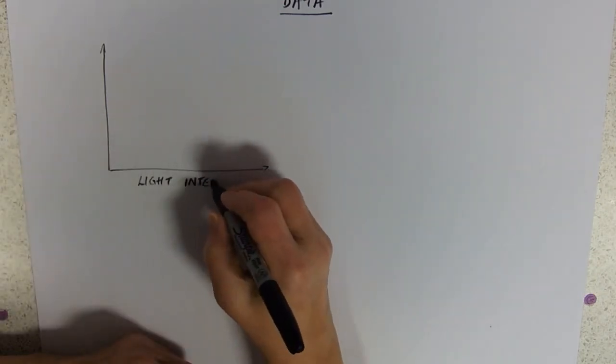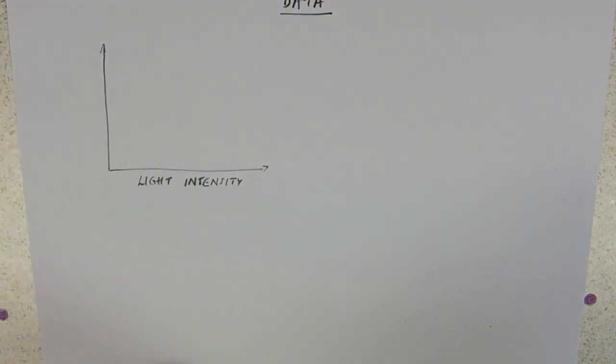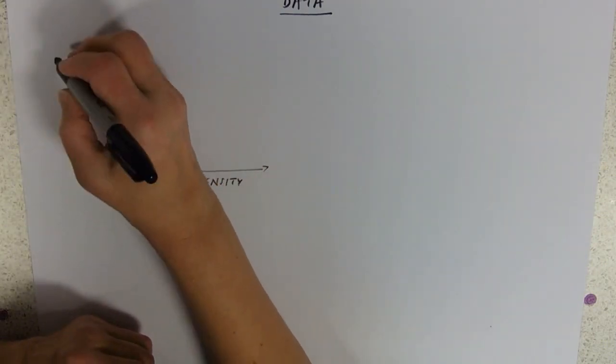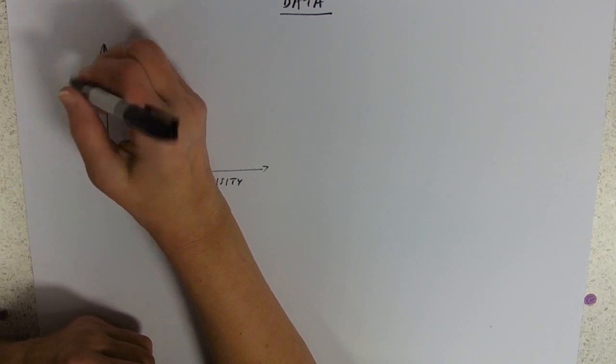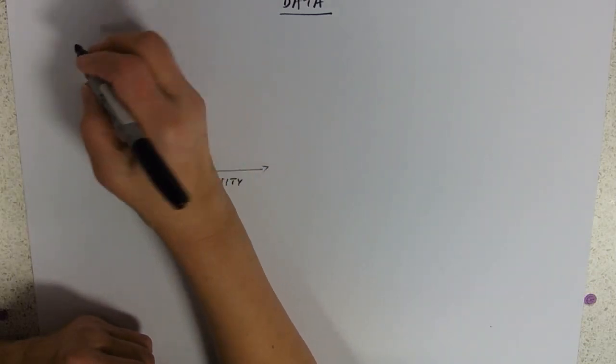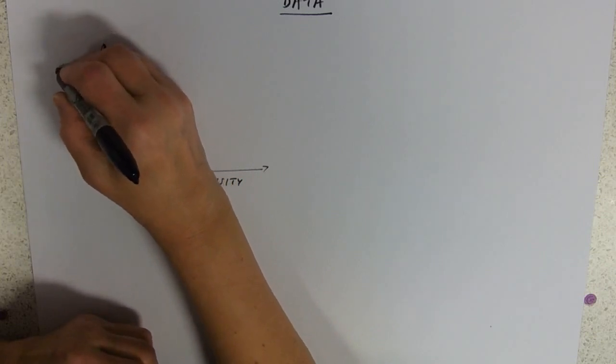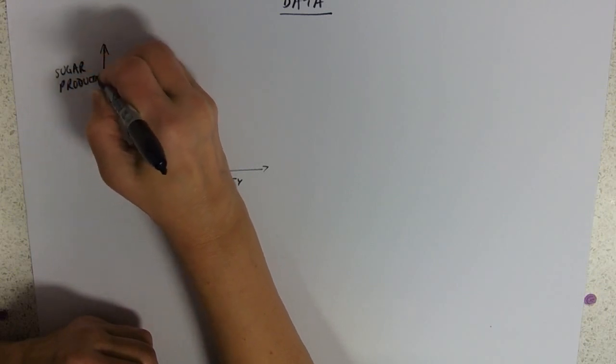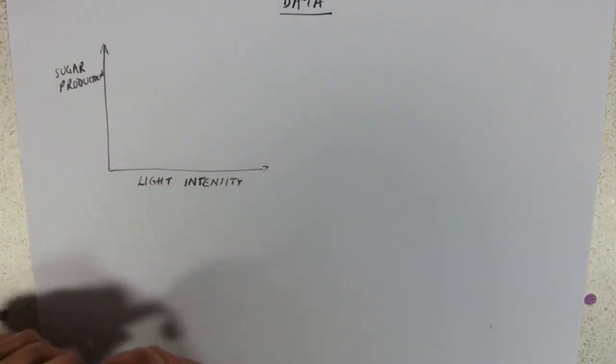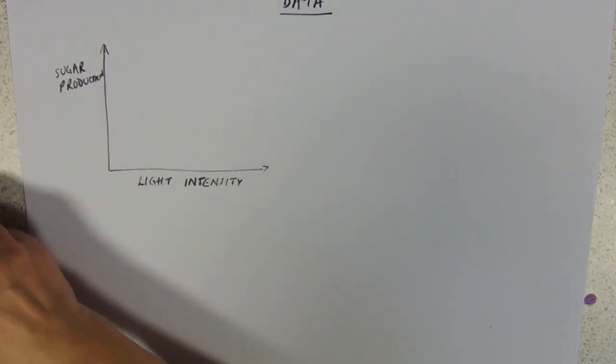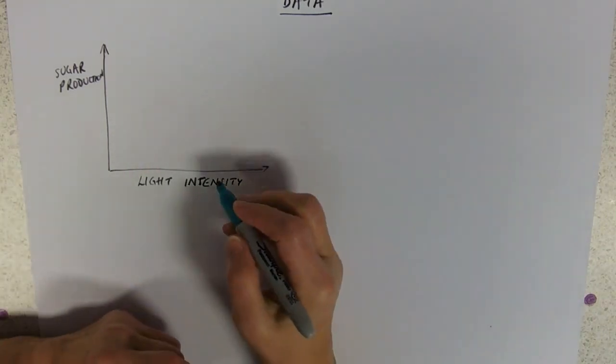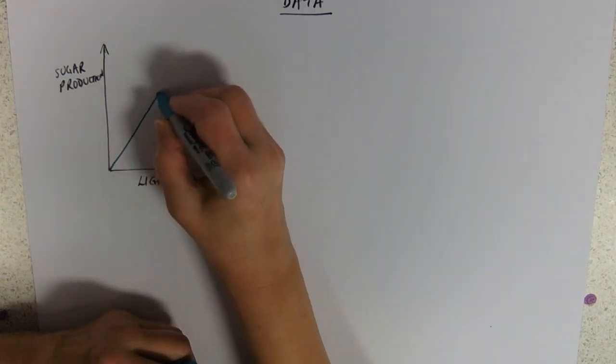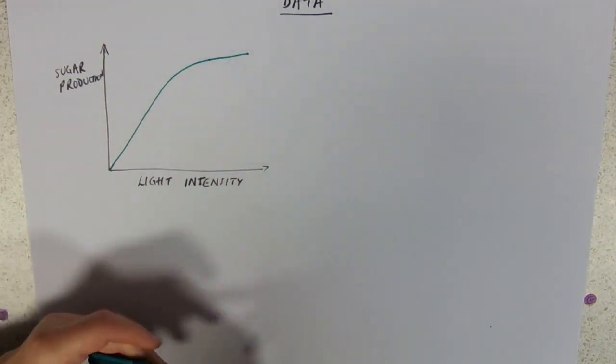I can't spell intensity. When you've done your work on limiting factors, that's your primary limiting factor. And if we look at sugar production, we can see that the higher the light intensity, the more sugars you produce. That's just to be expected, isn't it? The more light you've got, the more light you can absorb and the more photosynthesis you can do. There's going to be a limit to how much that can happen.